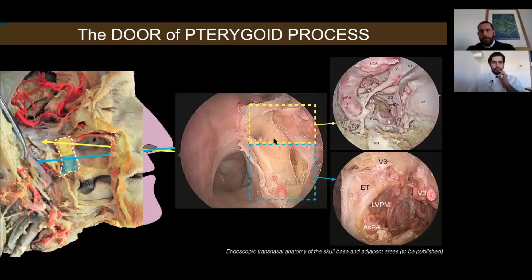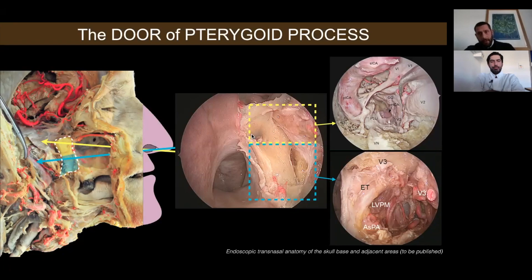The last door described in this presentation is the trans-pterygoid approach, which I divide into superior and inferior. The limit between them is the line of the vidian canal. If you go superior to the vidian canal, you access the area of the cavernous sinus, Meckel's cave, and the petrous apex. If you go inferior to the vidian canal, you go into a totally different area: the upper parapharyngeal space.